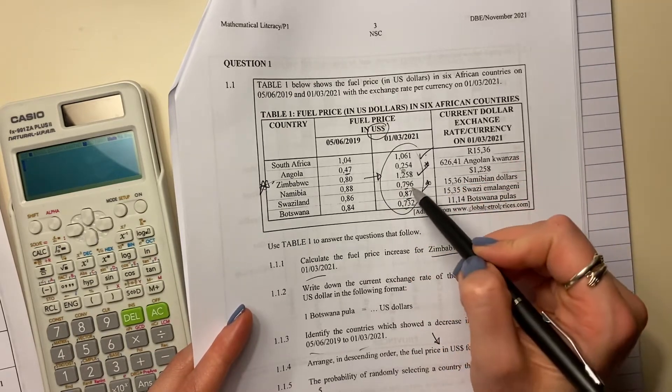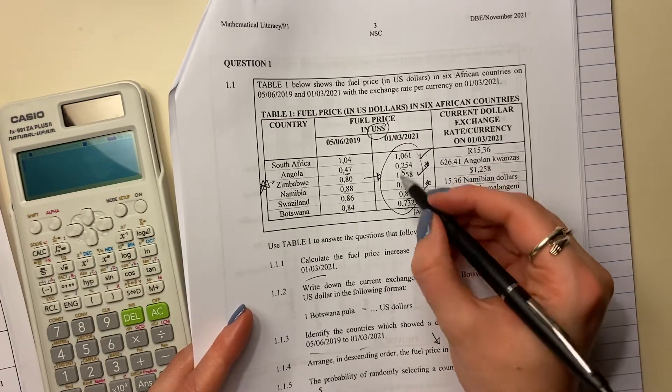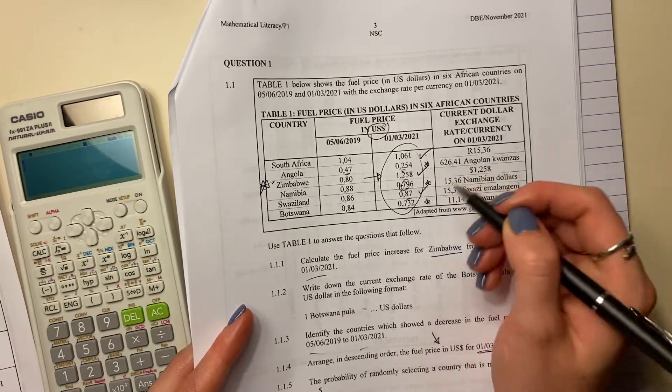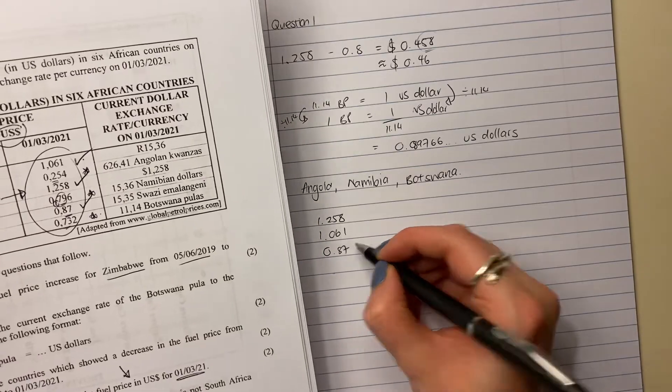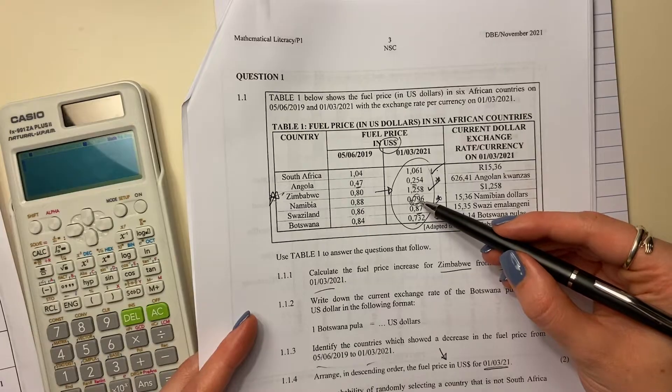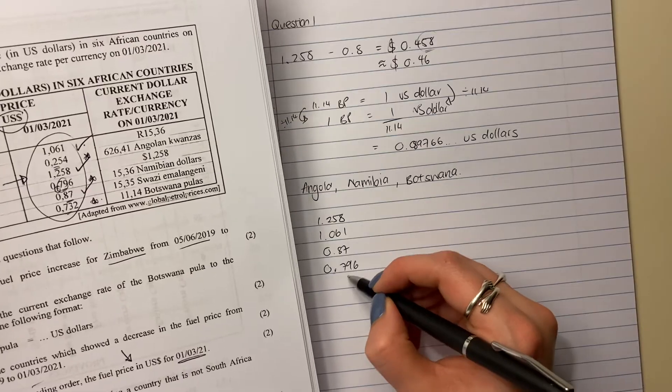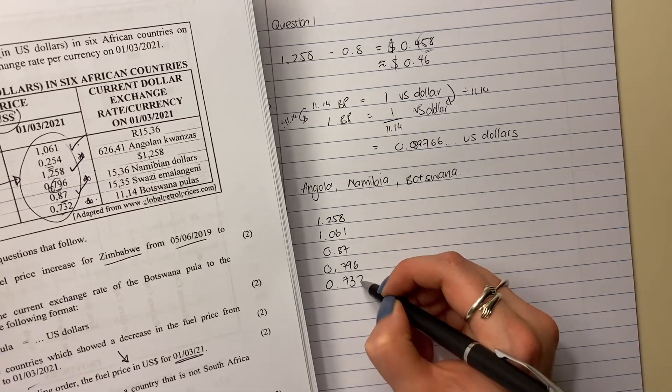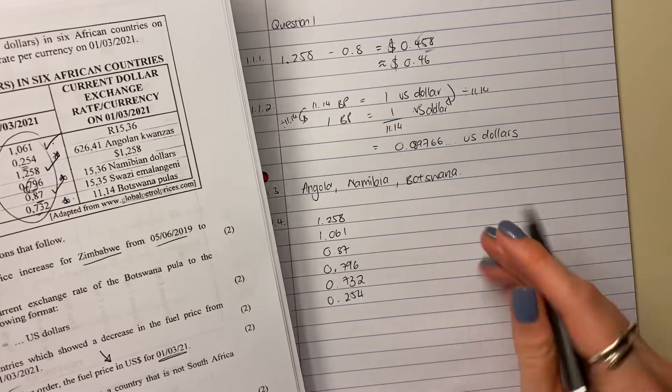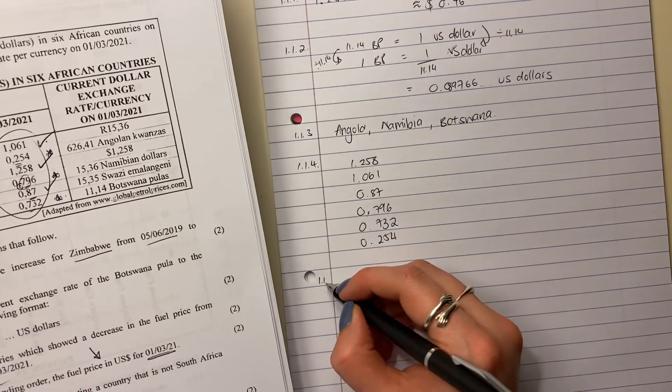So don't get confused because students often want to do like this one because they're like, oh, 796. It's not 796. Look at the decimals after, the numbers after the decimal and compare those accordingly. 0.87. What comes next? I'm going to say 0.796. 0.732. And then 0.254. And that's it. So you see largest to smallest. So be careful there. They're testing whether you understand your decimals, which is quite important.